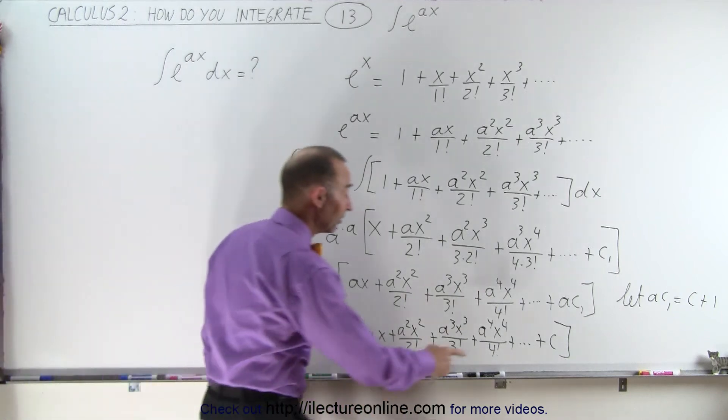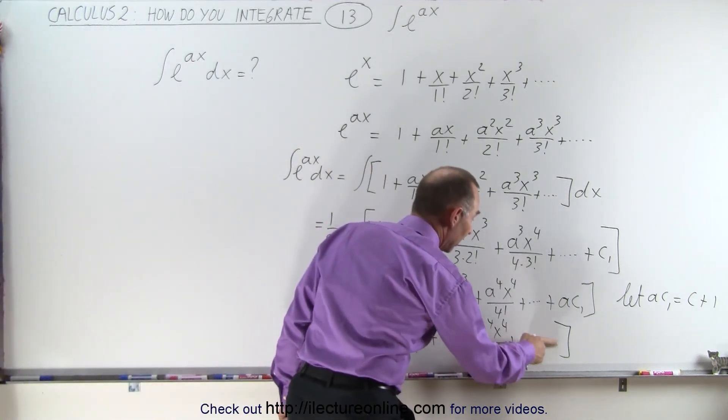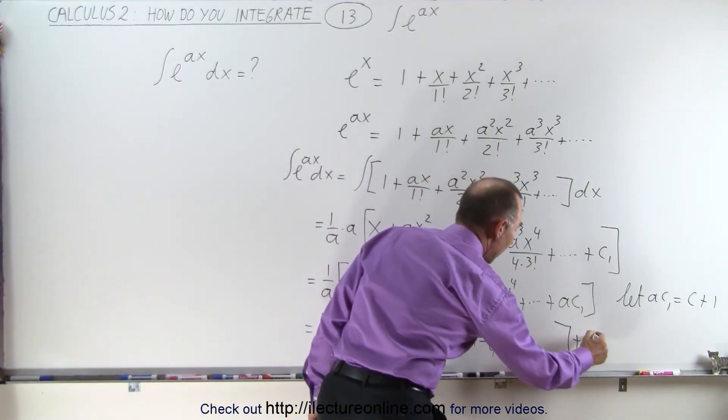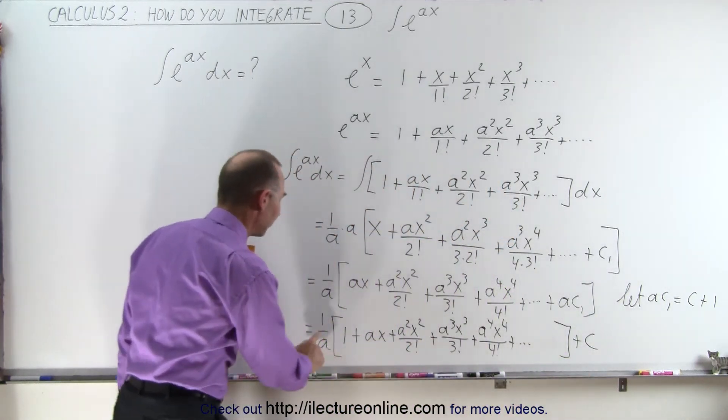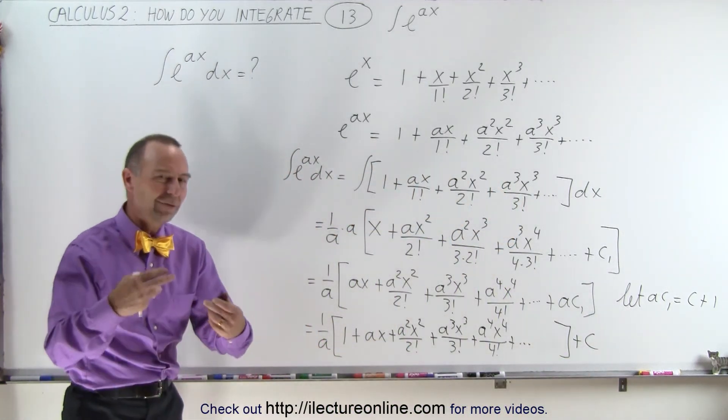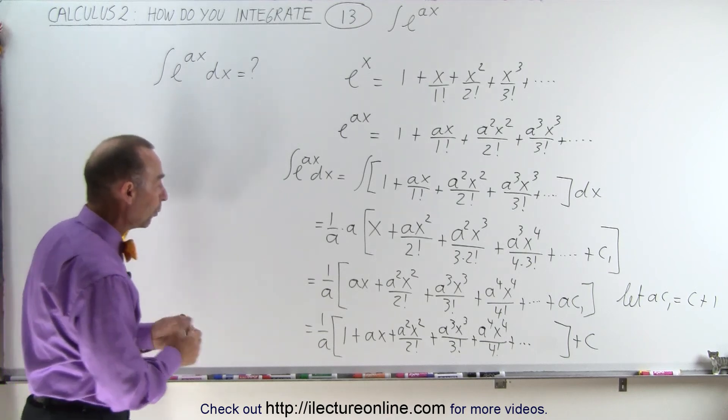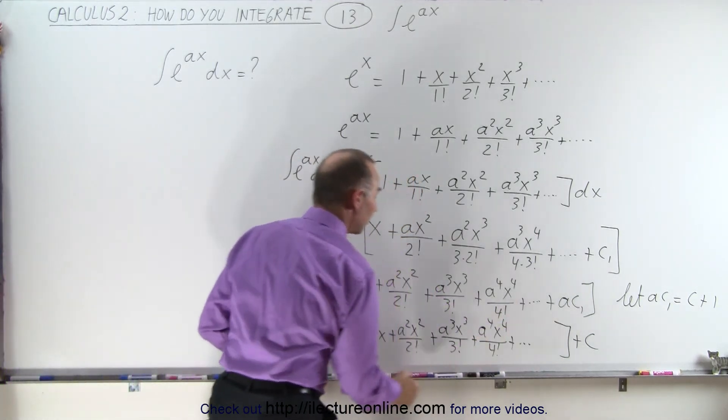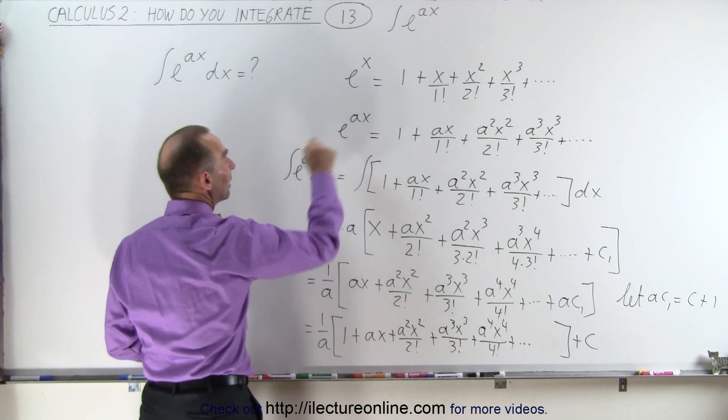Actually, what I can do is I can simply take that constant of integration and write it on the outside of that bracket so I don't have to multiply times 1 over a. But now I realize that what's inside the brackets here is simply e to the ax.